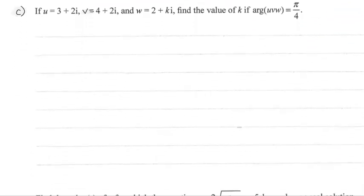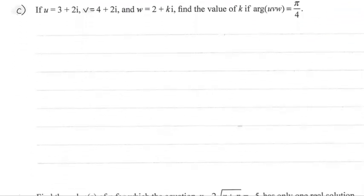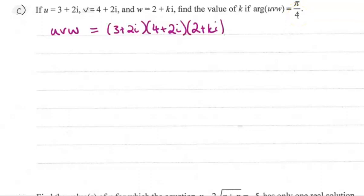Alright, part c. For part c, we are given three complex numbers and we want to find the value of k, which sits inside one of them, if the argument of those three multiplied together makes pi by 4. Let's start by multiplying those three things together — u times v times w.